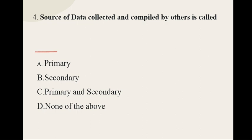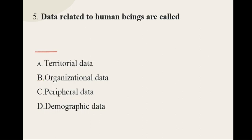Question number four: Source of data collected and compiled by others is called — options are primary, secondary, primary and secondary, and none of the above — and the correct option is secondary data.